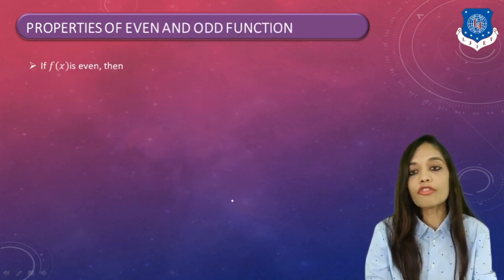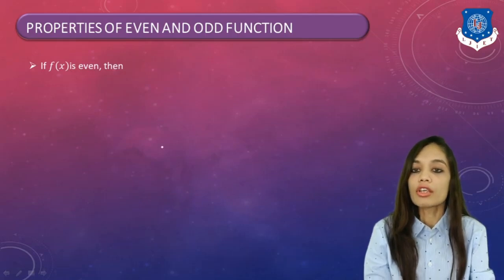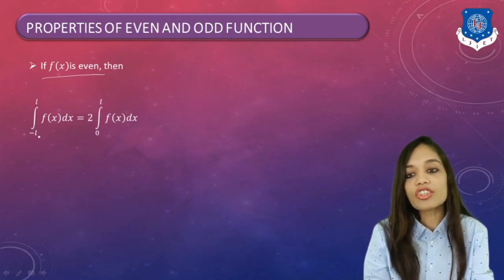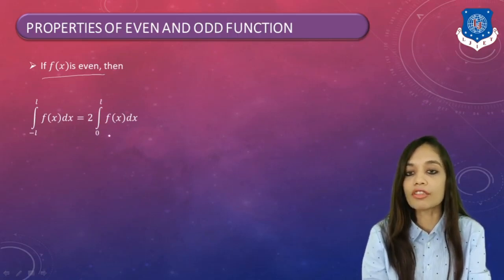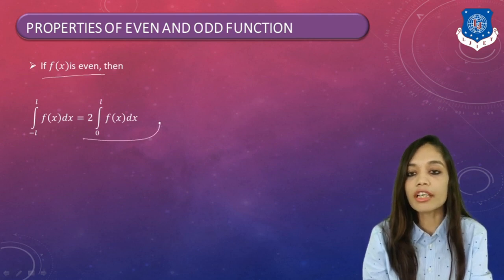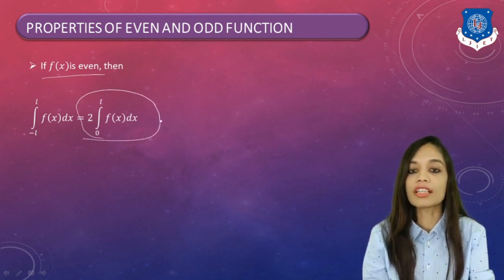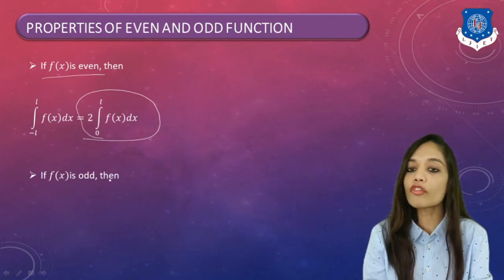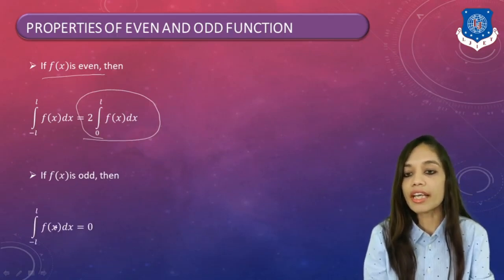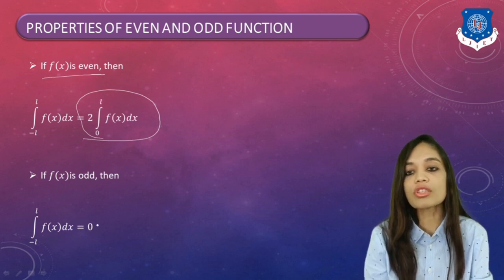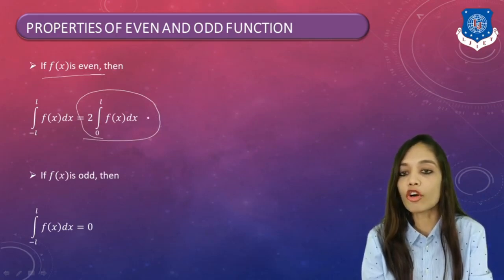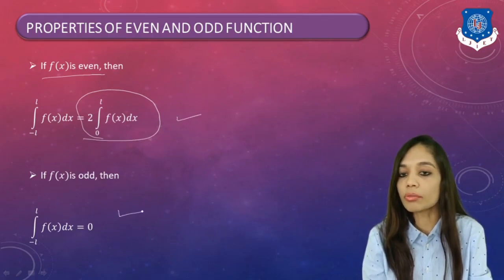Now a very important integration property: if f(x) is an even function, then the integral from −L to L of f(x) dx equals 2 times the integral from 0 to L of f(x) dx. For an odd function, the integral from −L to L of f(x) dx equals 0.